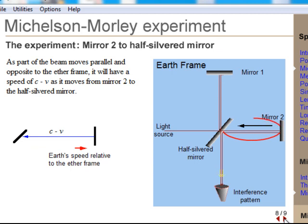This beam, again parallel to the ether, but moving in the opposite direction, would be slowed down.